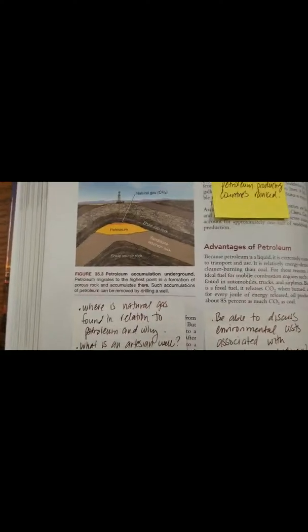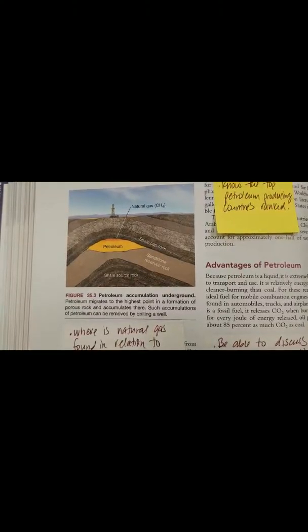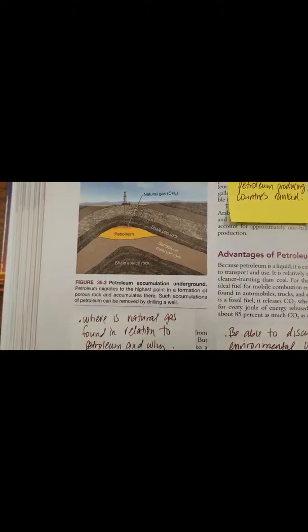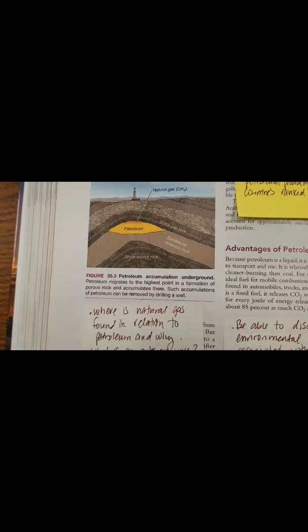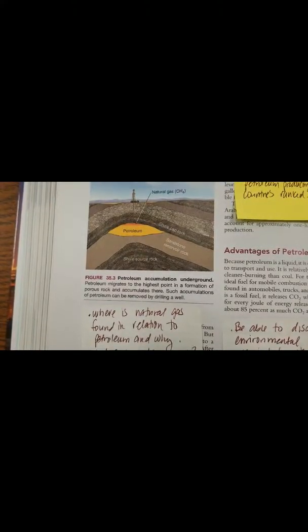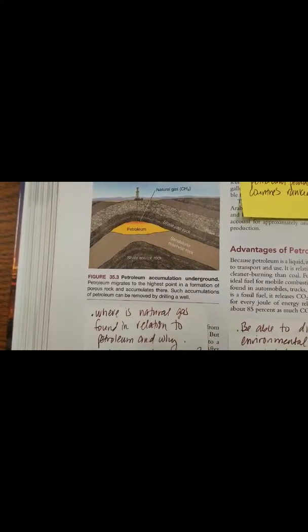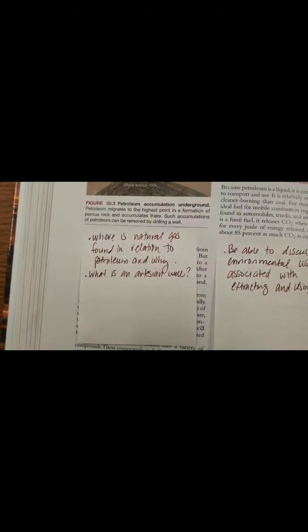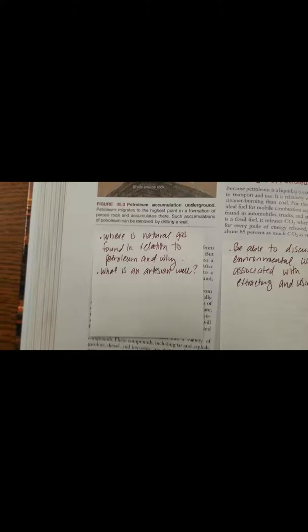Looking at this picture, there is a petroleum reserve and then a natural gas reserve, and it's found underneath the shale caprock. So that's an impermeable layer, meaning that fluid can't move through. In a sense, it's trapped underneath that shale caprock. Natural gas will always generally be on top because it's less dense. It's a gas versus the liquid underneath. Where is natural gas found in relation to petroleum? It's always found above it.